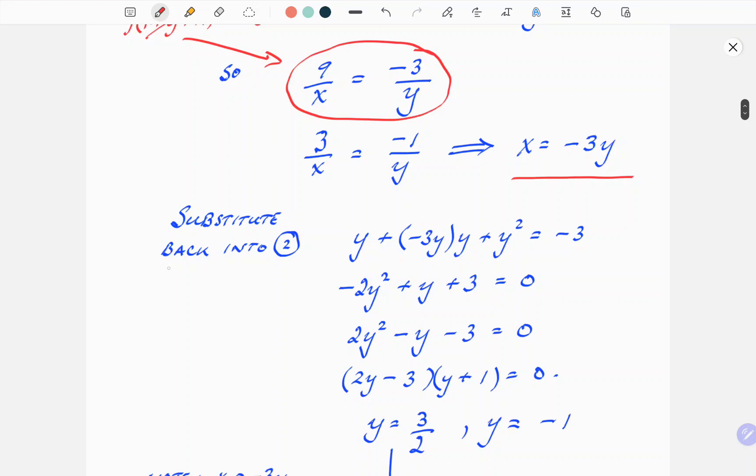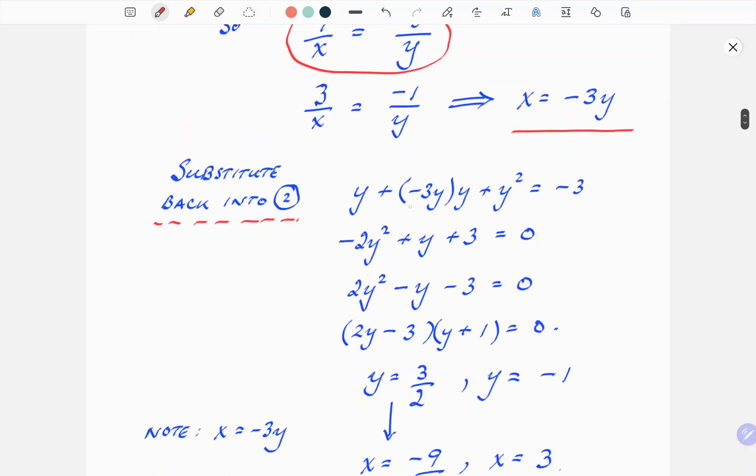Now we substitute back into equation 2. I just chose that randomly, you could substitute back into equation 1 as well, it doesn't make a difference. So, when we put that in, that's where x was. So y plus x equals minus 3y in brackets, times y plus y squared equals minus 3. That's just restating equation 2 and replacing x with minus 3y.